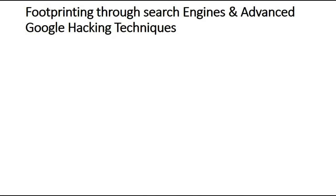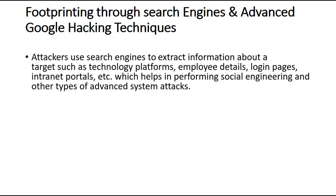Next is Footprinting through Search Engines and Advanced Google Hacking Techniques. If you want to do passive reconnaissance, you need to collect information from search engines or use advanced Google hacking techniques. Attackers use search engines to extract information about a target such as technology platforms, employee details, login pages, and internet portals. You can search using search engines and advanced Google hacking techniques.